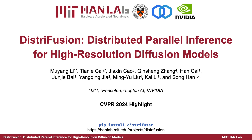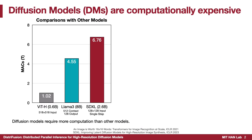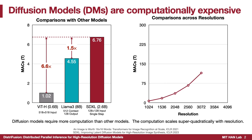Diffusion models play a vital role in achieving such milestones. However, they are computationally expensive. For example, a single step of SDXL requires 6.6 times more computation than ViT-H and 1.5 times more than LLaMA 3AB. Moreover, the computation scales superquadratically with the resolution. Such prohibitive computation presents a tremendous barrier for applications.